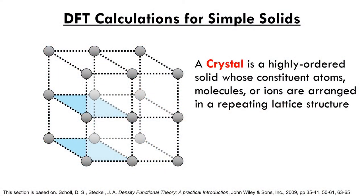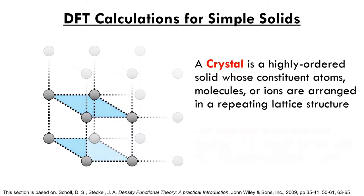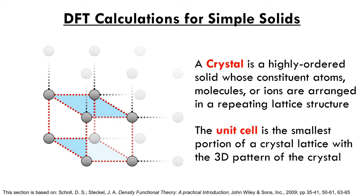If you're already familiar with the concept of crystals, you know that there are solid materials whose constituent atoms, molecules, or ions are arranged in a highly ordered, repeating lattice structure which extends in all directions. The smallest portion of a crystal lattice that shows the three-dimensional pattern of the entire crystal is known as the unit cell. A crystal is, in essence, just a unit cell that's been repeated over and over in 3D space.